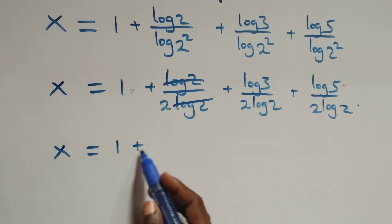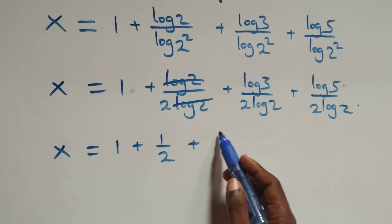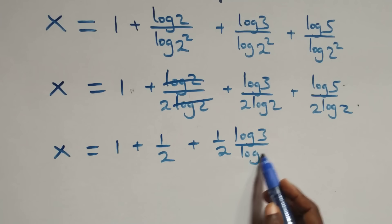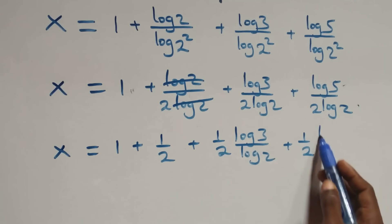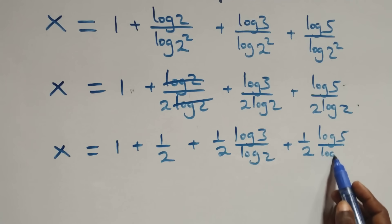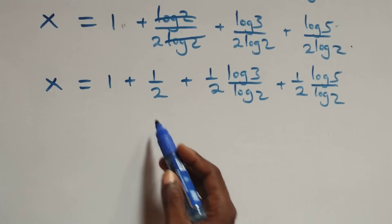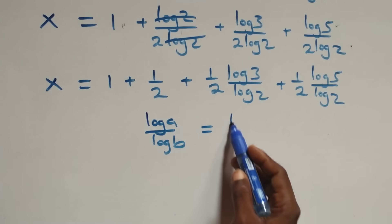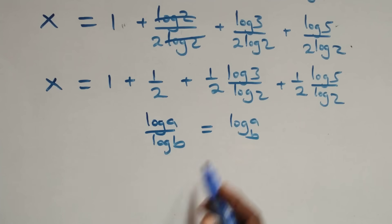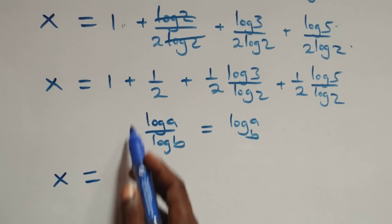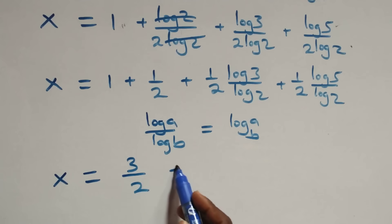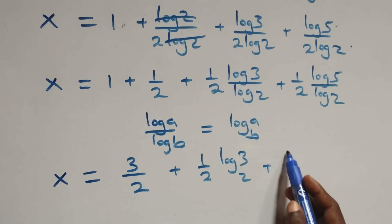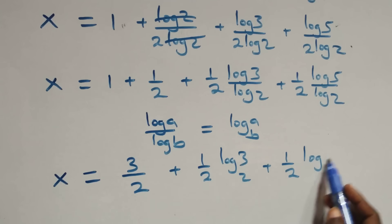Log 2 cancels with each other in the first term, giving 1 over 2. We can write the remaining terms as 1 over 2 times log 3 over log 2, plus 1 over 2 times log 5 over log 2. Applying the change of base formula — log A over log B equals log A base B — we have x equals 1 plus 1 over 2, that's 3 over 2, plus 1 over 2 log 3 base 2, plus 1 over 2 log 5 base 2.